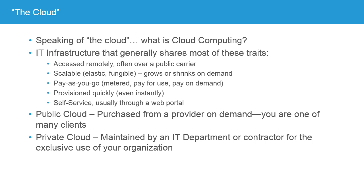There are two types of cloud. Public cloud is purchased from a provider on demand — you're one of many clients, and there are several large providers including Microsoft, Amazon Web Services, IBM, and others. A private cloud, on the other hand, is maintained either by an internal IT department or a contractor for the exclusive use of your organization. There's also a third model, sometimes called a hybrid cloud, which combines elements of both — certain services are in the public cloud, while others are exclusively maintained in your own data center.